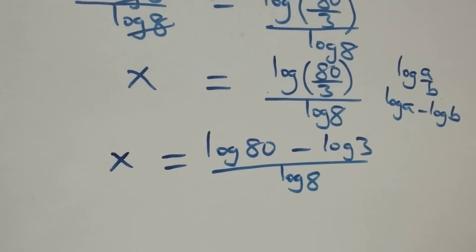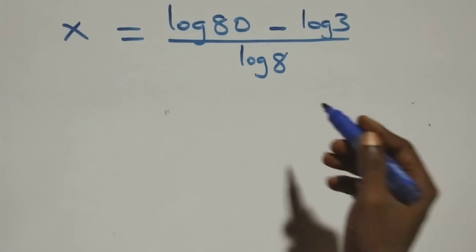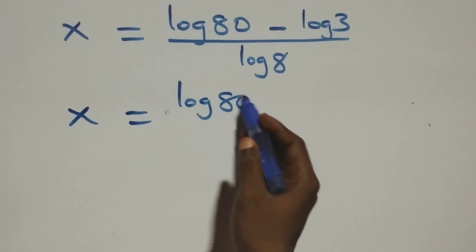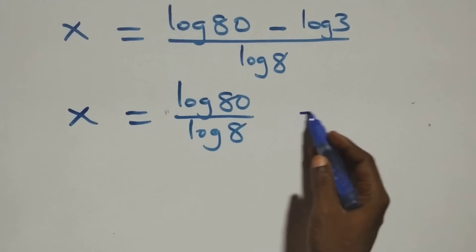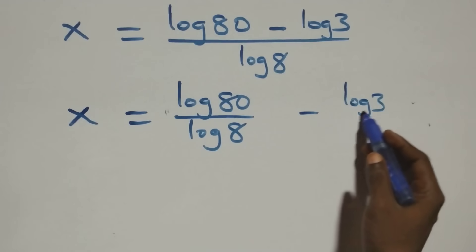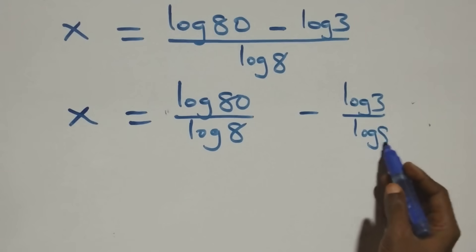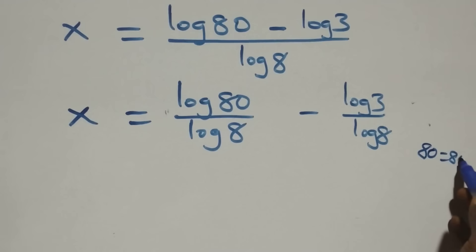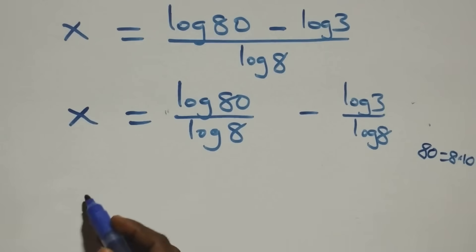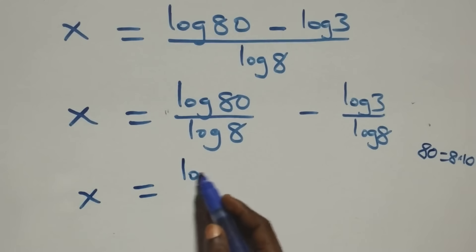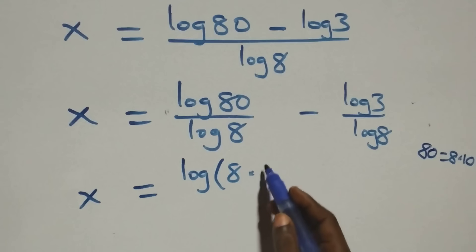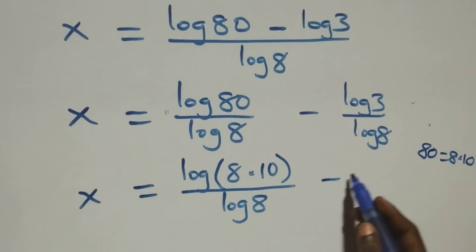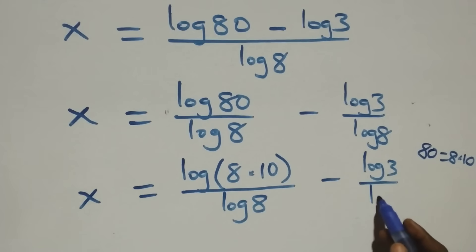From here we separate this into two fractions: x equals log 80 over log 8. We can write 80 as 8 times 10, which implies all we have here becomes x equals log(8×10) over log 8, and minus log 3 over log 8.